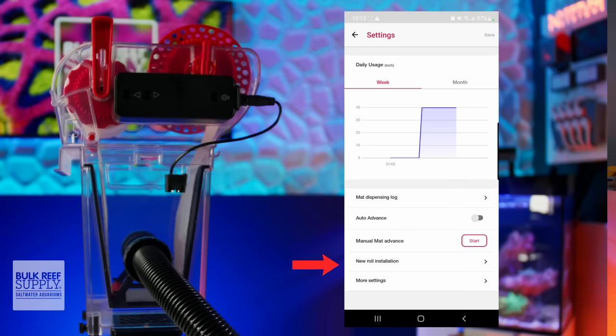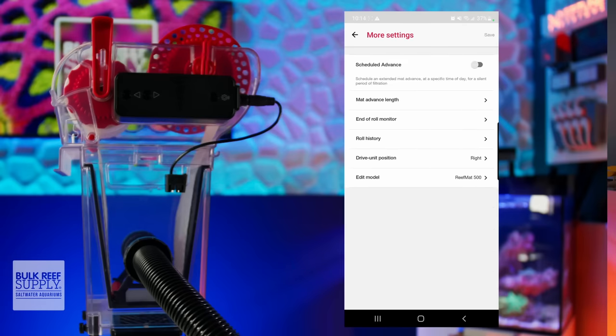You can also access advanced settings to dial in the Reef Mat perfectly for your system, by setting the mat advanced length, choose how many days you'd like the app to notify you before a roll's about to end, look at the roll history, and also change the drive position or model if you ever decide to change things up.